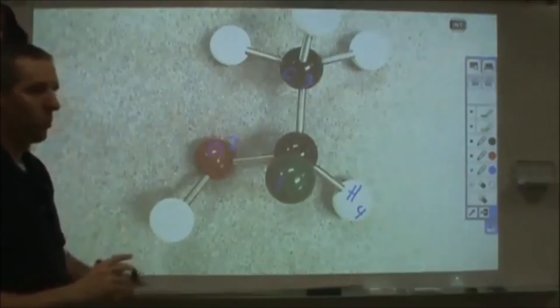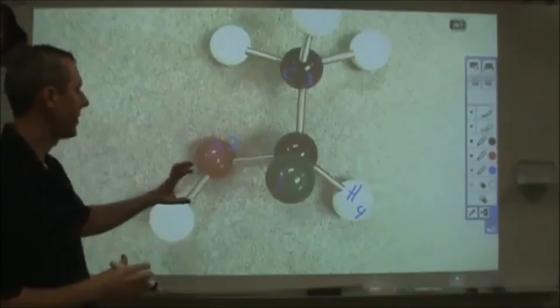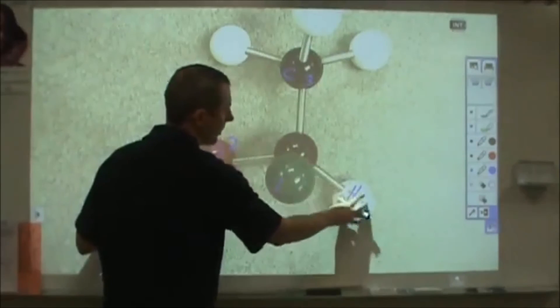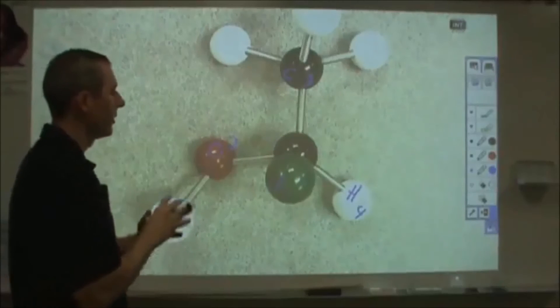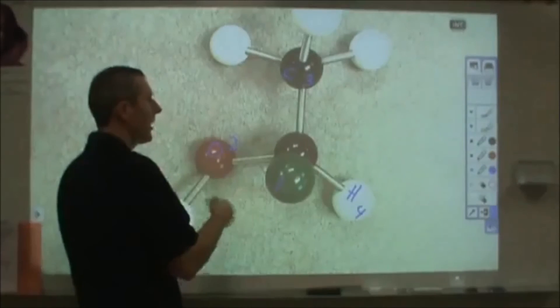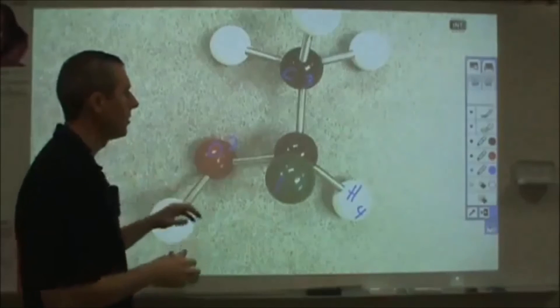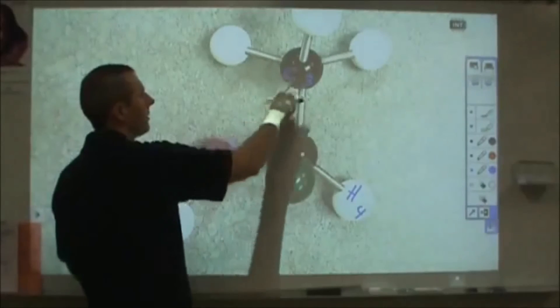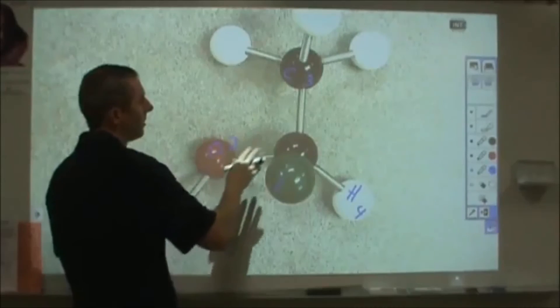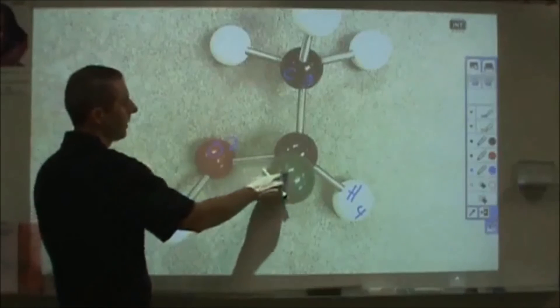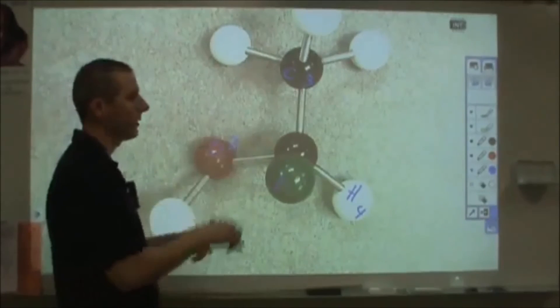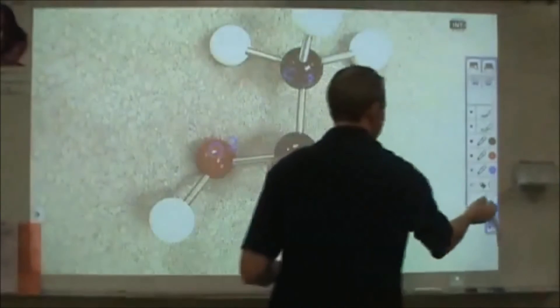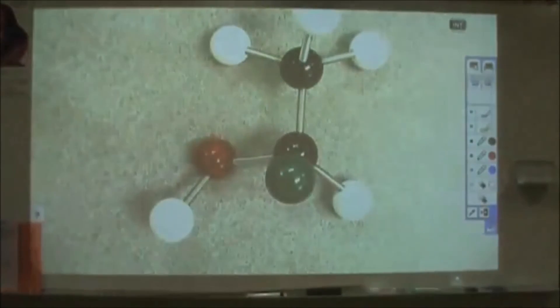So in order for me to see whether this is R or S, what I need to do is I need to orient myself where I'm looking down at the carbon with the fourth hydrogen, with the fourth constituent as far away from me as possible. And then I want to look and see how this rotates. So just by looking at it like this, it looks like I'm going from top to the bottom right to the bottom left, and so I'm looking at a clockwise rotation.